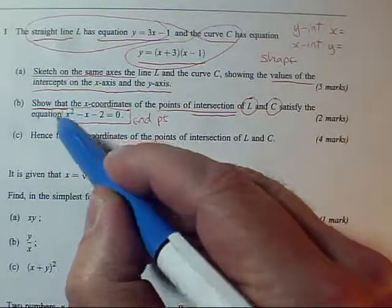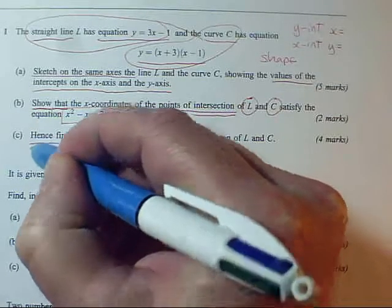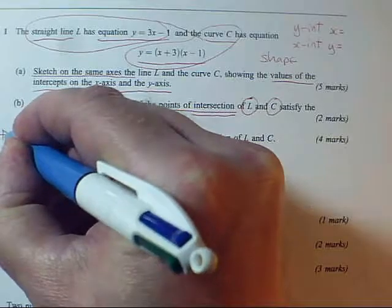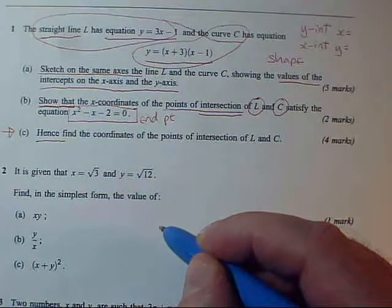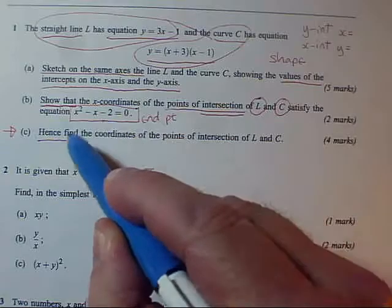As so often, show that is then followed up with a hence question. Now, hence often means this is a re-entry point. And in this particular case, it is. Here is our starting point for part C.